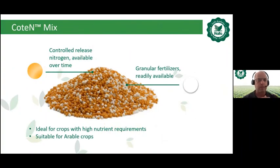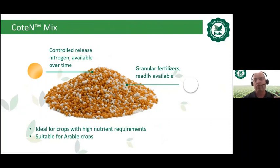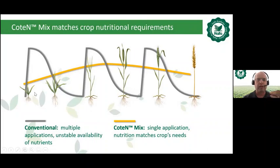Zooming into Cotton Mix blend, part of it is fully coated — the brown Multicote technology on urea — and part is white granular urea. This blend is ideal for arable crops because of high nutrient requirements. We have readily available nitrogen for crops like corn that need a very high demand at the beginning of the crop cycle, which is why it is very suitable for arable crops.